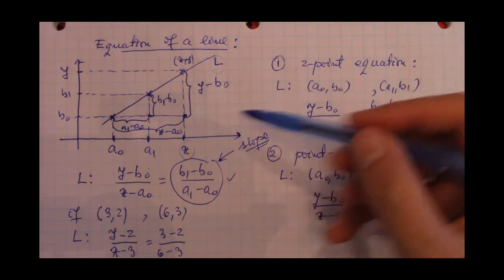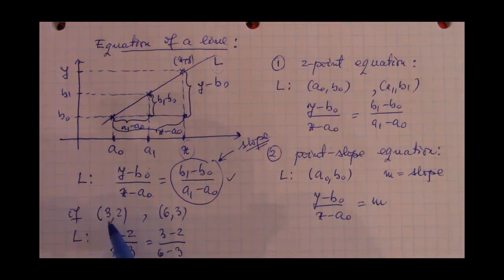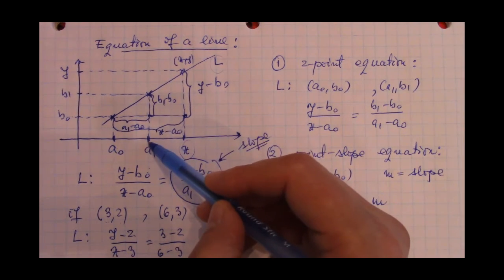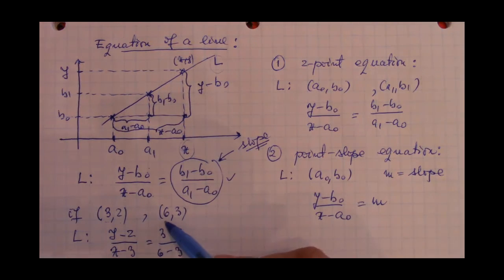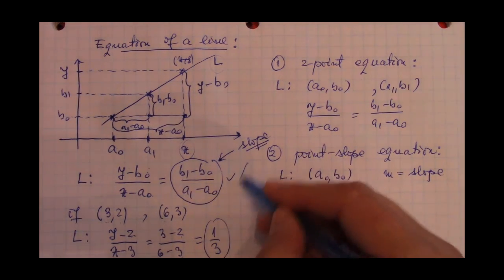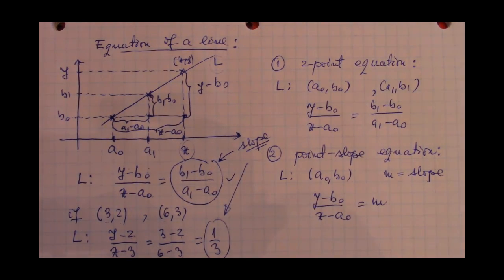Now, if we actually take some points, let's say maybe a0, b0 is the point of coordinates 3 and 2, and this other point whose coordinates were a1, b1, are 6 and 3. Our equation becomes y minus 2 over x minus 3 is equal to 3 minus 2 over 6 minus 3, and this is actually equal to 1 over 3. And this is the slope of this line.